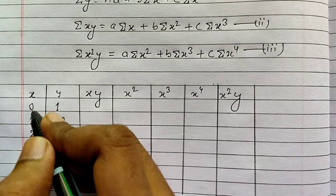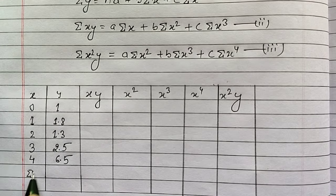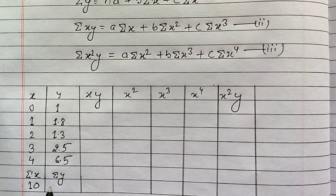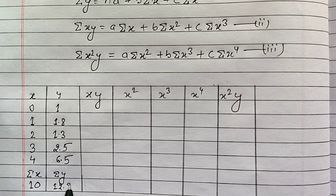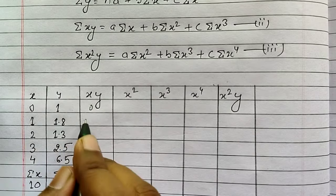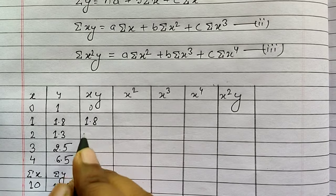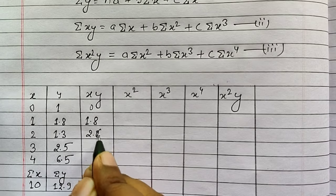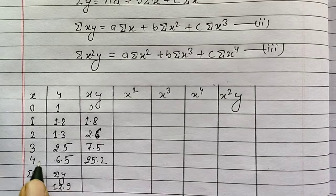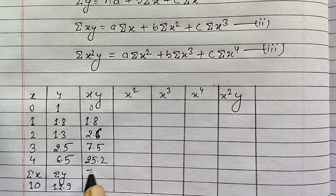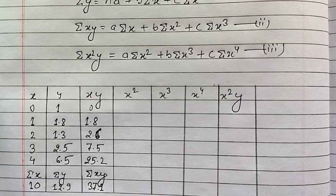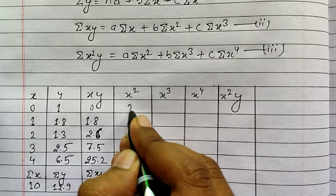Summation x is going to be 10, and summation y is going to be 12.9. For the product xy: 0 times 1 is 0, 1 times 1.8 is 1.8, continuing similarly — 2.6, 7.5, 25.2. Summation xy is going to be 37.1. For x squared, squaring each term gives 0, 1, 4, 9, 16, so summation x squared equals 30.